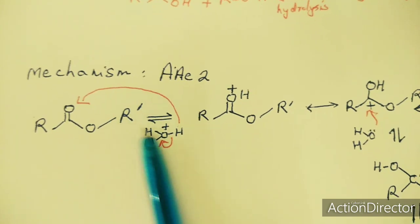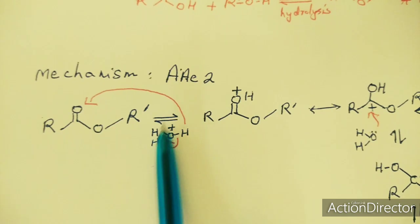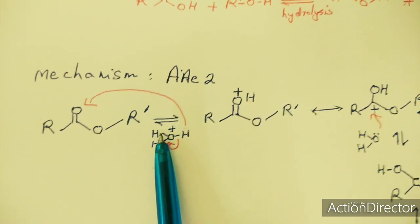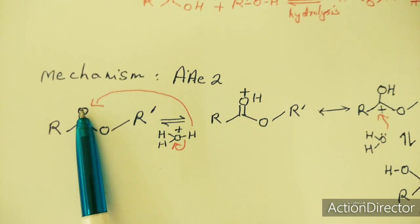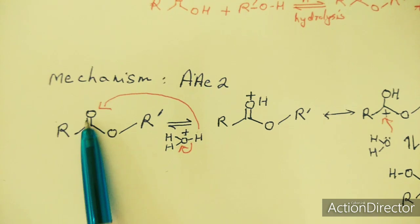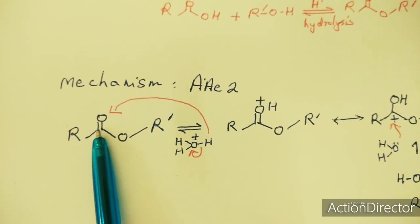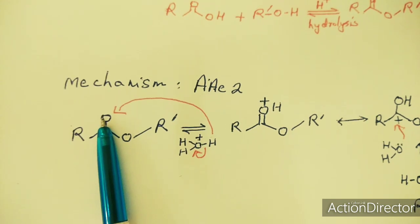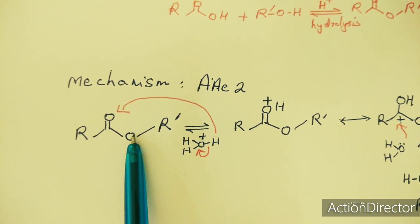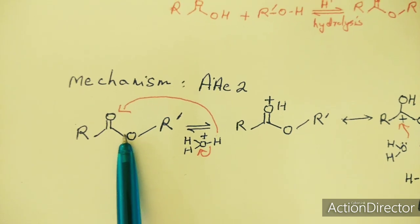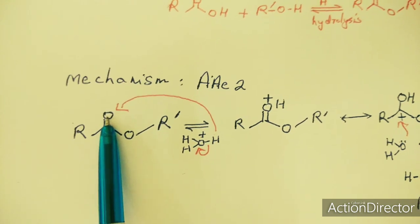In this mechanism, water together with the acid forms hydronium ions. Due to an electromeric shift — a carbon-oxygen electromeric shift — oxygen becomes negatively charged and carbon becomes positively charged. As a result, the hydrogen will attack the negatively charged oxygen. There are two oxygens: one is the carbonyl oxygen and the other is the RO oxygen. Hydrogen tends to attack the carbonyl oxygen, not the RO oxygen.